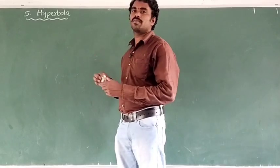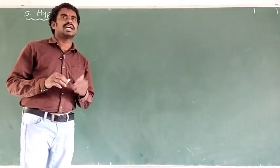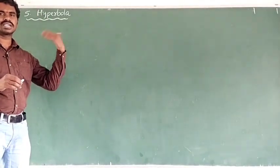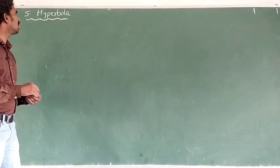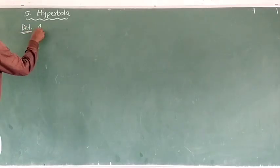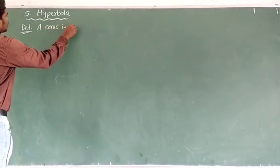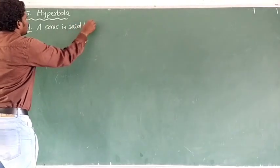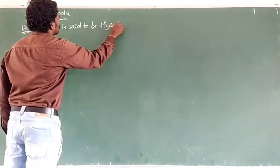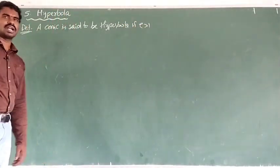What do we mean by hyperbola? If the eccentricity value is greater than one, then that conic is called a hyperbola. So, the definition: a conic is said to be a hyperbola if the E value is greater than one.